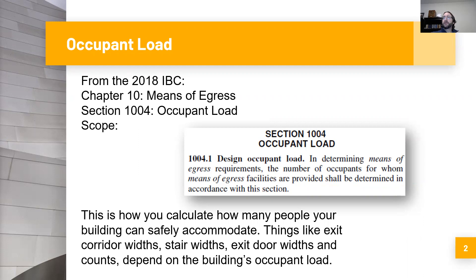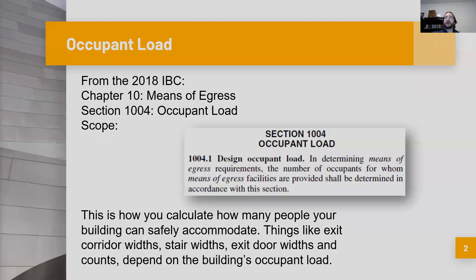Calculating the occupant load of any given building is one of the most important parts of safe building design. This is how you calculate how many people the building can safely accommodate. Things like exit corridor widths, stair widths, exit door widths, exit door counts, and locations — all of these things depend on the building's occupant load. Chapter 10, specifically Section 1004, is where you'll find the regulations for calculating these rules.